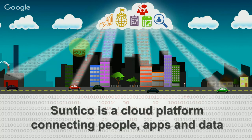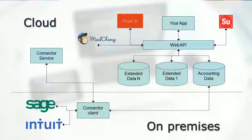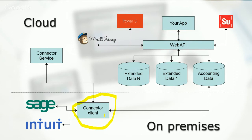Looking at this conceptually, we have a diagram divided into two halves: the cloud half at the top and the on-premises half at the bottom. At the bottom you see Sage, Intuit, and other on-premises accounting software — today we're working with Sage, and Intuit is on the roadmap. The client installs a local piece of connector software called a connector client, which polls Sage for updates and updates Sage in return. That information is published up into a cloud database of accounting data, which can then be accessed by other apps and services via a web API that we publish, available to ourselves and to developers.